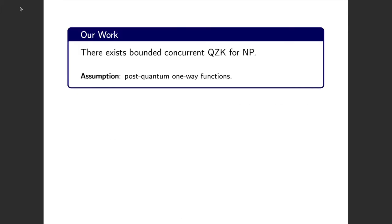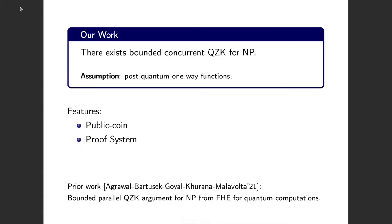We show that there exists bounded concurrent QZK for NP, assuming the existence of post-quantum one-way functions. Two nice features of our protocol: first, it is a public coin protocol, and moreover, it is a proof system — the soundness holds against unbounded provers. There was a prior work on bounded parallel QZK argument system for NP from FHE for quantum computation, appearing at EuroCrypt this year. Our work improves upon their result in terms of assumption, and we also achieve the stronger notion of bounded concurrent QZK.